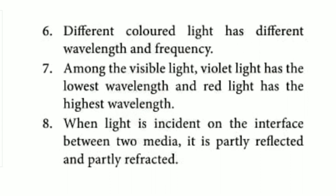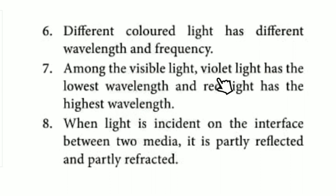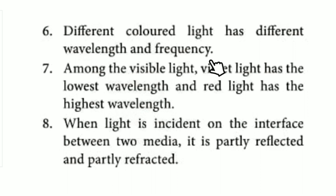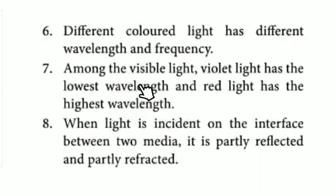Looking at visible light, violet has the lowest wavelength and red has the highest wavelength. Each color in the visible spectrum has a different wavelength and corresponding frequency.